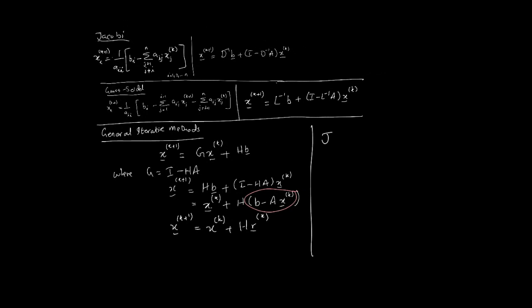So for the Jacobi, if you compare, we clearly see that H is equal to D inverse, and for the Gauss-Seidel, H is equal to L inverse, and now, if you look at these, you can clearly see that this matches exactly with these general iterative methods. So that, basically, is, in a nutshell, how one can structure general iterative methods. So we'll stop here. Thank you.